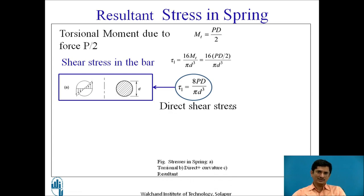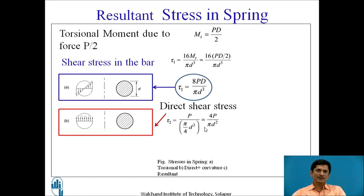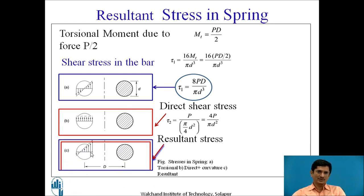Then second part is the direct shear stress. In direct shear stress, tau 2 is given as P upon pi by 4 d square. We can rewrite it. But the distribution for the shear stress is shown as it is same throughout as compared with the distribution maximum at the inner end and minimum at the outer end, zero at the center. If I superimpose these two stresses, I can get the resultant stresses wherein at the inner position the stress is highest and at the outer end the stress is minimum.